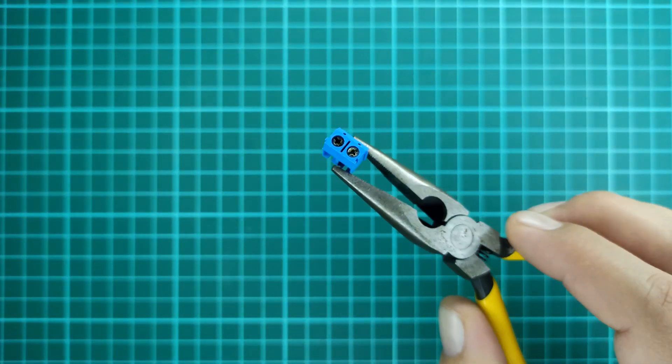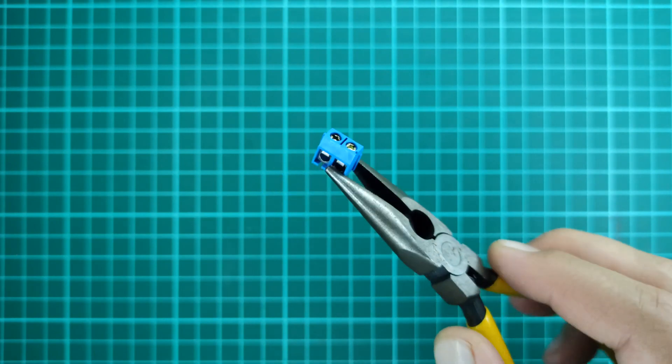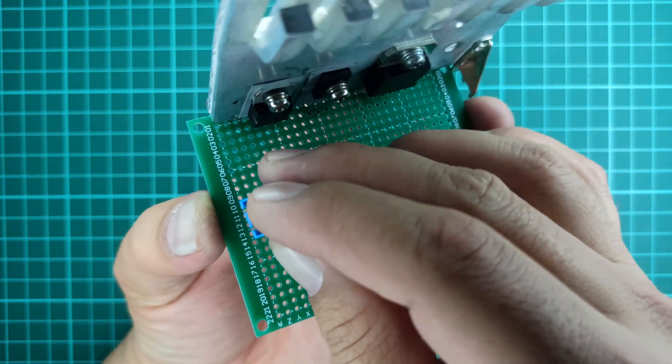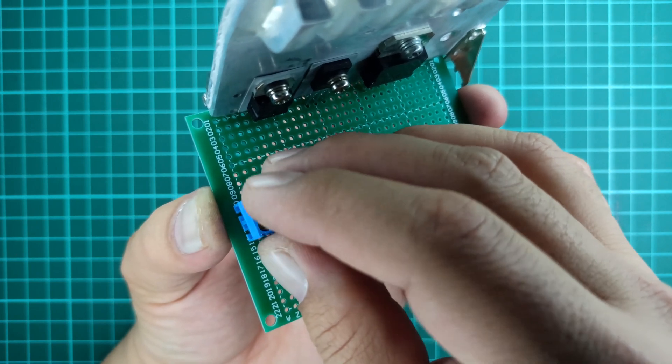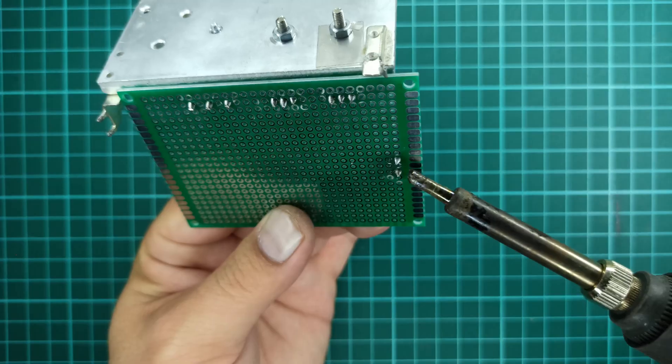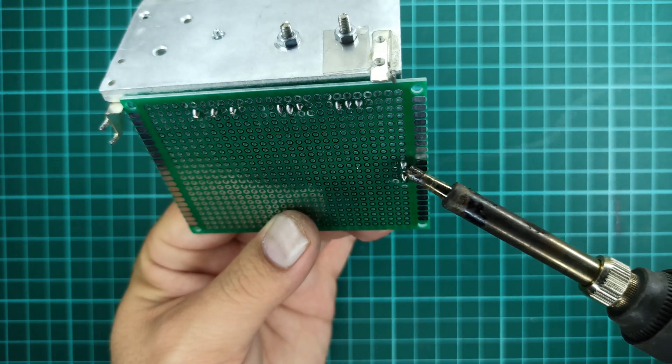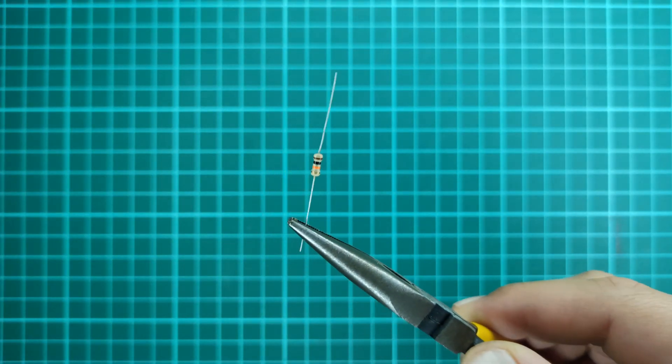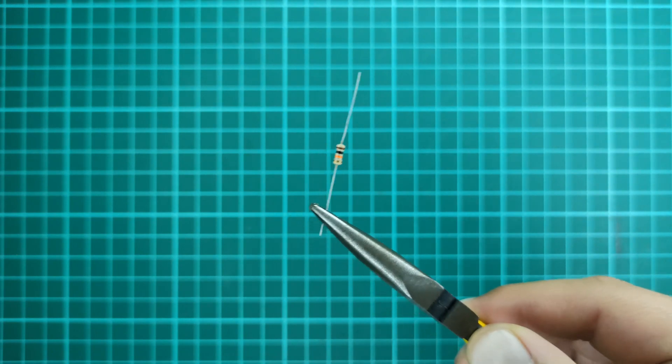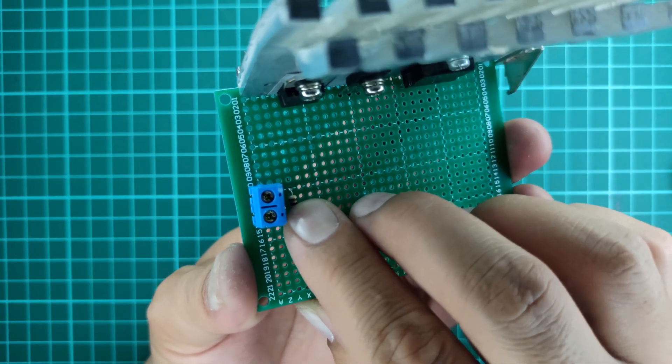Take a two-pin block connector and solder it to the PCB. This will be the input connection point. Take a 10 kilohm resistor and solder it near the input side along with an LED for power indication.